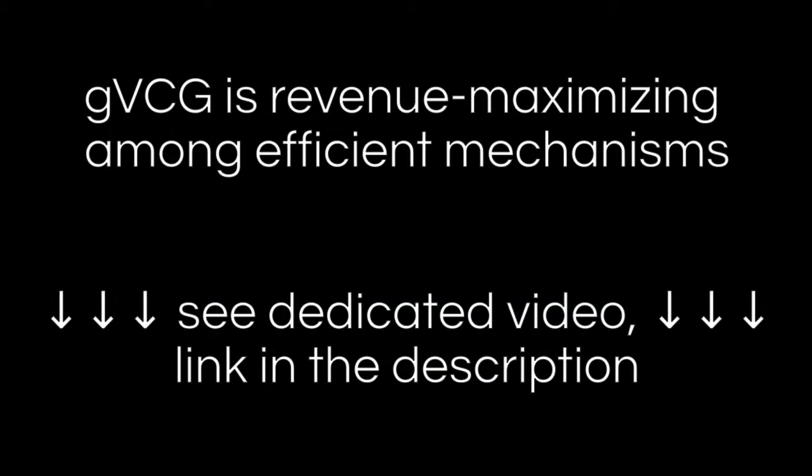In the first part of lecture number five, we went through the proof of why the generalized VCG mechanism is revenue maximizing among all the efficient mechanisms that are Bayesian incentive compatible and interim individually rational.